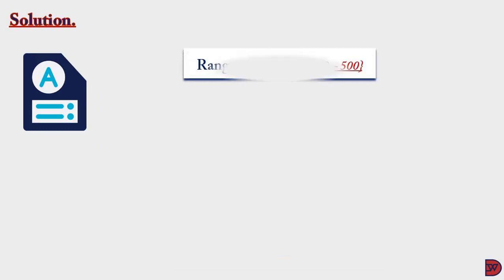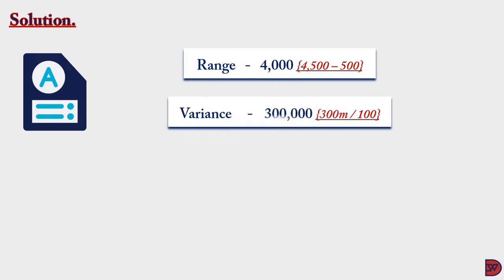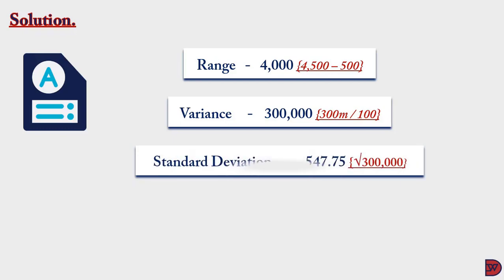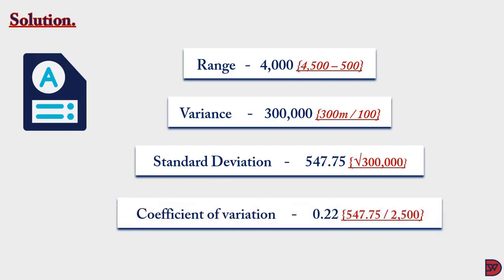The range is 4,000 (highest midpoint 4,500 minus lowest midpoint 500). The variance is 3,000,000, that is 300,000,000 divided by the total frequency of 100. The standard deviation is 1,732.05... — correction, 547.75 — the square root of 300,000. The coefficient of variation is 0.22, which is the standard deviation of 547.75 divided by the mean of 2,500.